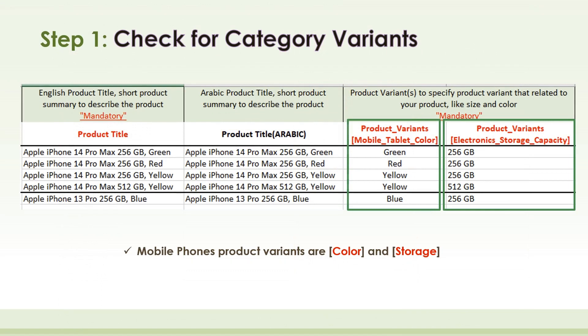Let's take an example with the Mobile Phones category. Apple iPhone 14 Pro Max has three color variants and two size variants. These will be grouped under one Group ID.